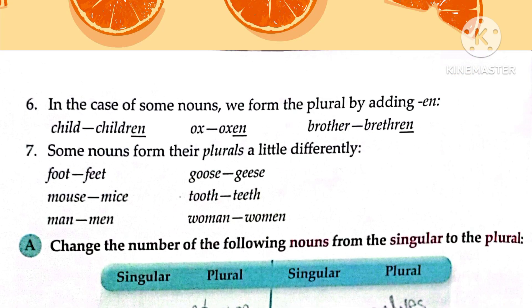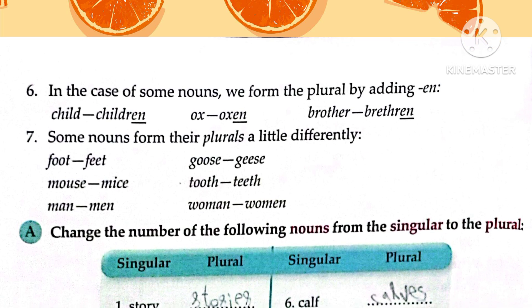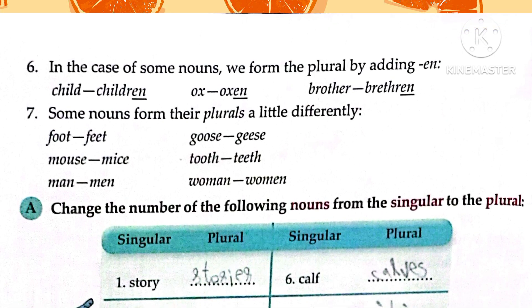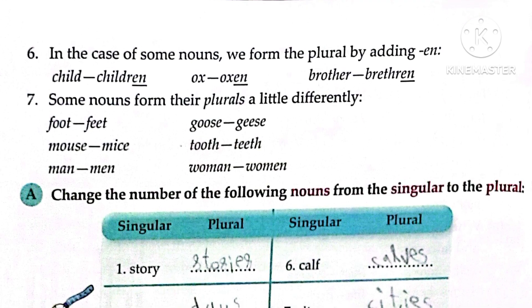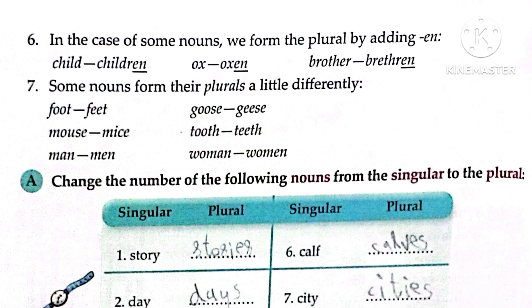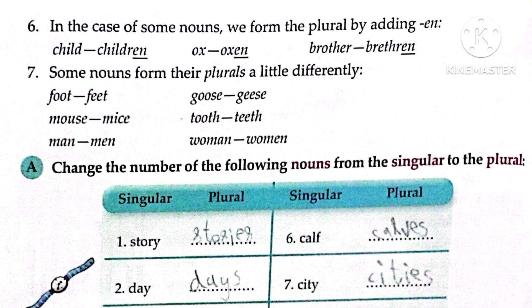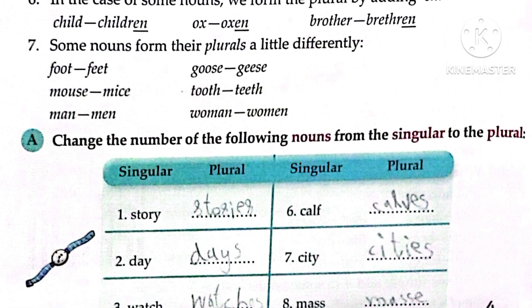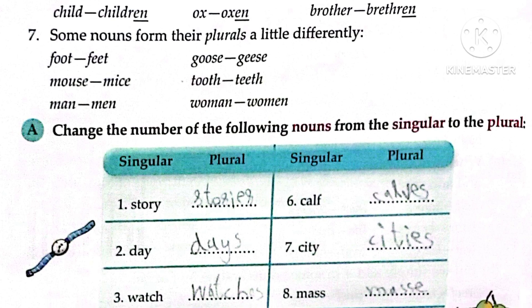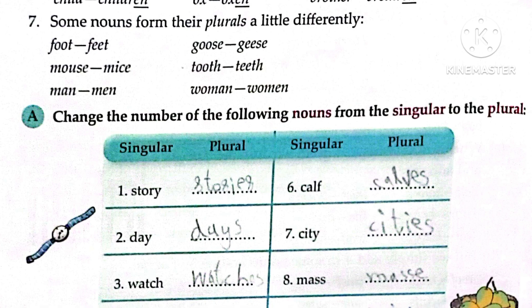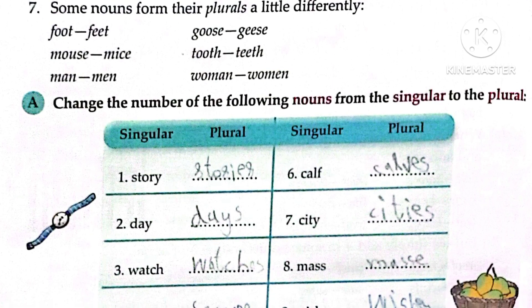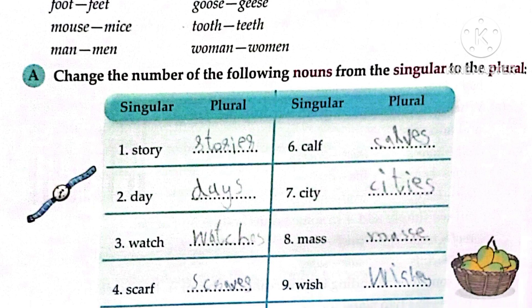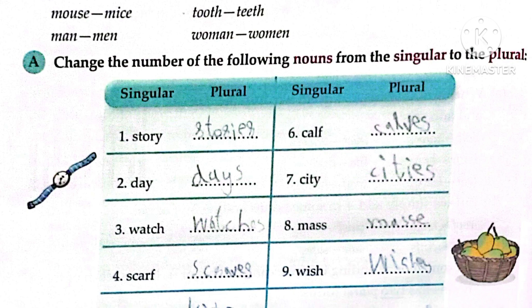Number six: for some nouns, we form the plural by adding EN. For example: child → children, ox → oxen, brother → brethren. Number seven: some nouns form their plurals differently — by internal vowel change. For example: foot → feet, goose → geese, mouse → mice, tooth → teeth, man → men, woman → women. In foot and tooth, the double-O is replaced by double-E. In mouse → mice, and in man/woman, the A is replaced by E.